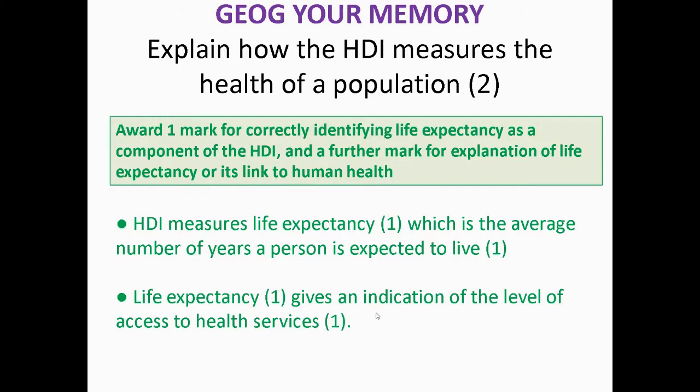Your education component is your years in education — the amount of years somebody is attending school. And your wealth is your GDP per capita. So you need to make sure you know those three different factors that are used to calculate HDI.